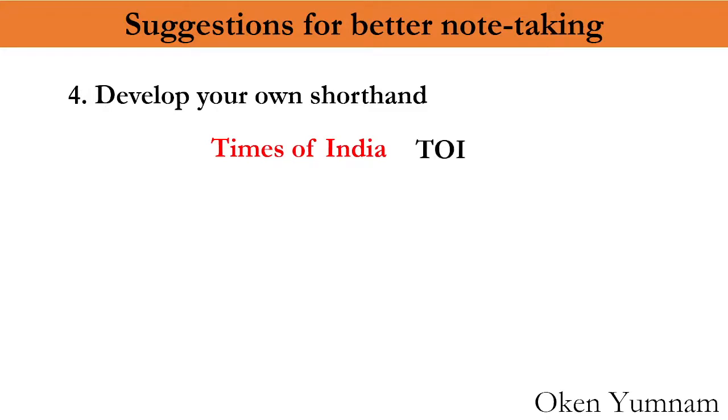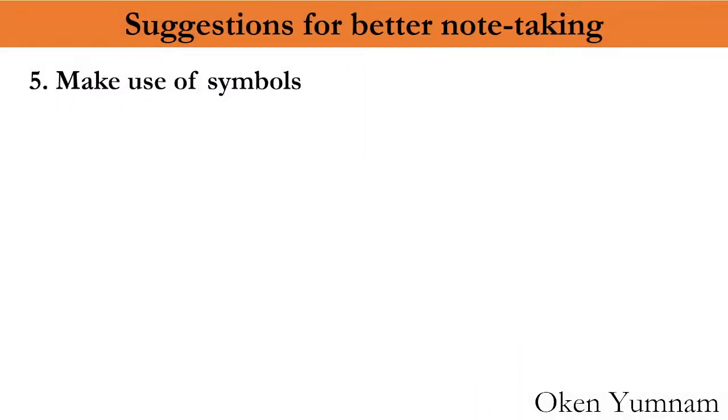Like for Times of India, you can write TOI. For important, IF. For group work, GW. No need to spend time writing along letters. For you, simply write the letter U. Similarly, you can make use of symbols like ampersand for 'and', less than symbol for decrease, greater than for increase.